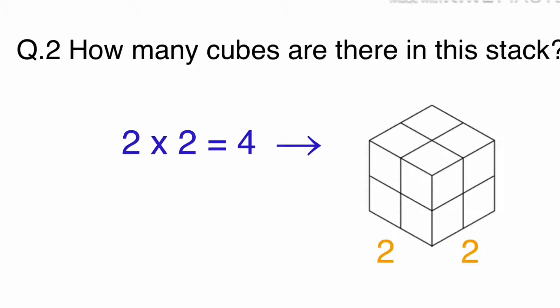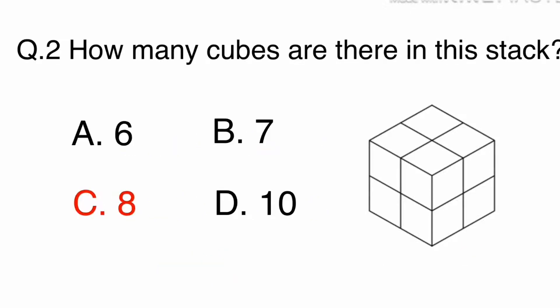Let's look at the top stack. 2 times 2 is 4. Now, let's look at the bottom. 2 times 2 is 4. If you add them all together, the total will be 8. The answer is C. 8.